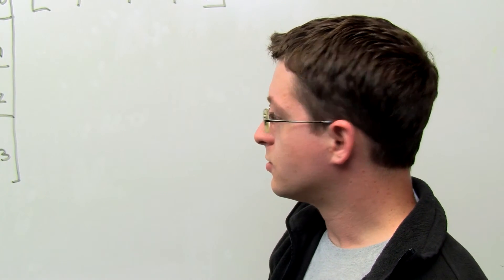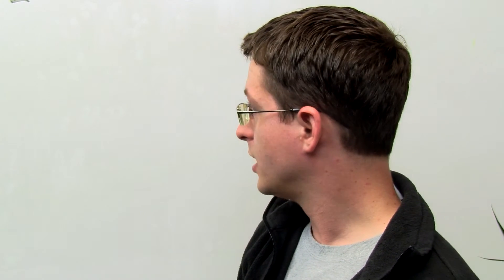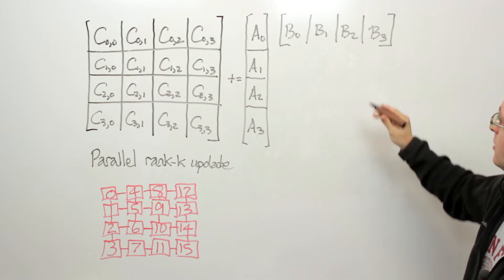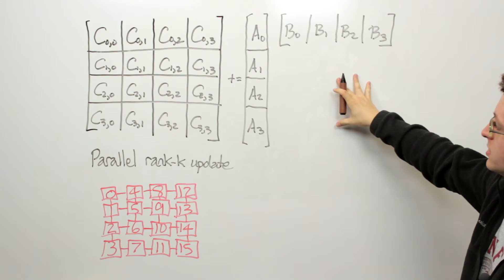So what this implies is a sort of algorithm for doing parallel matrix multiplication or at least performing a rank K update. So it would be called a broadcast-broadcast algorithm. So it would essentially take place in two steps.